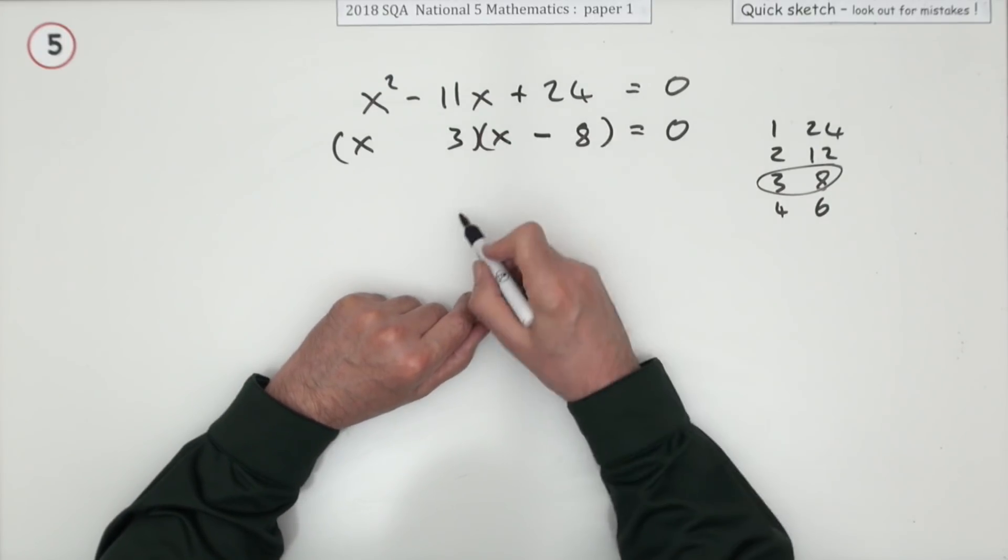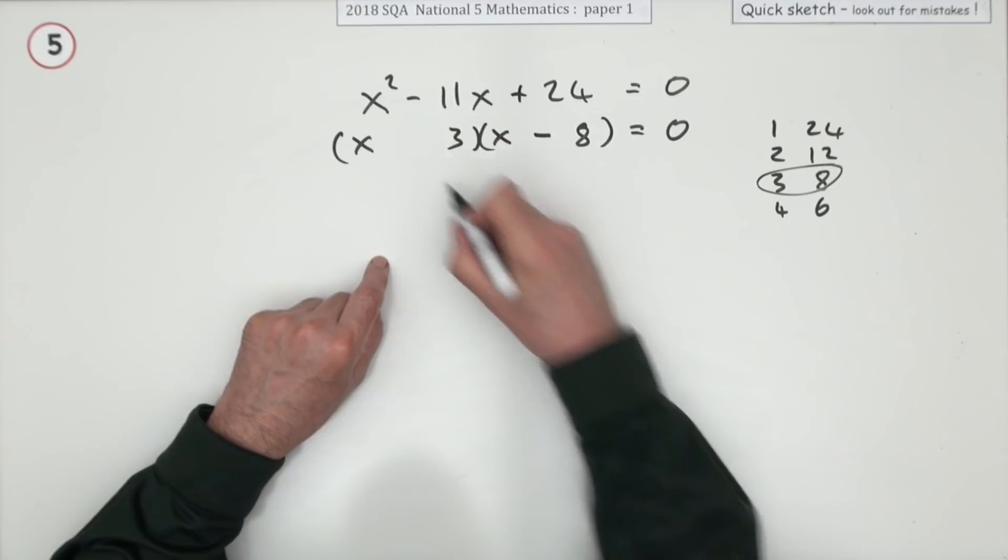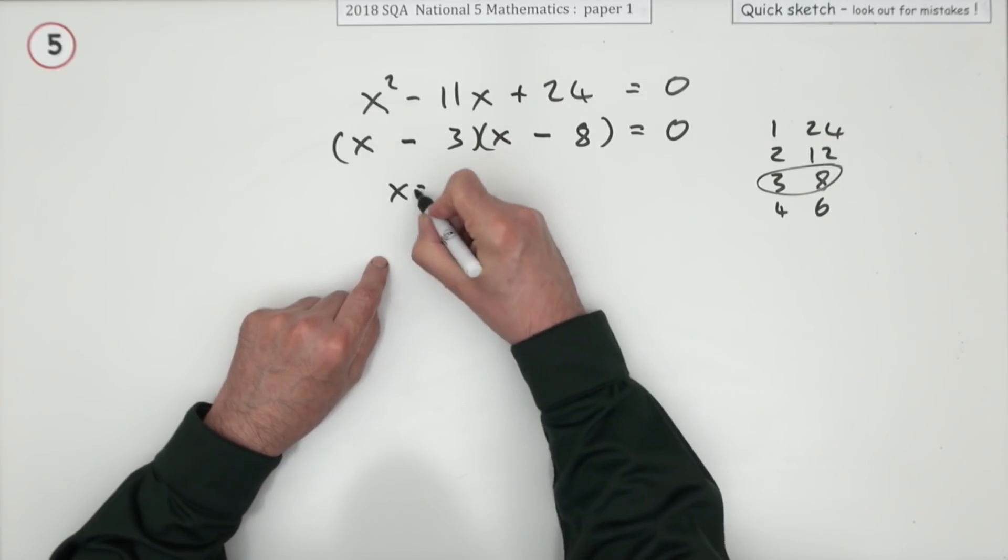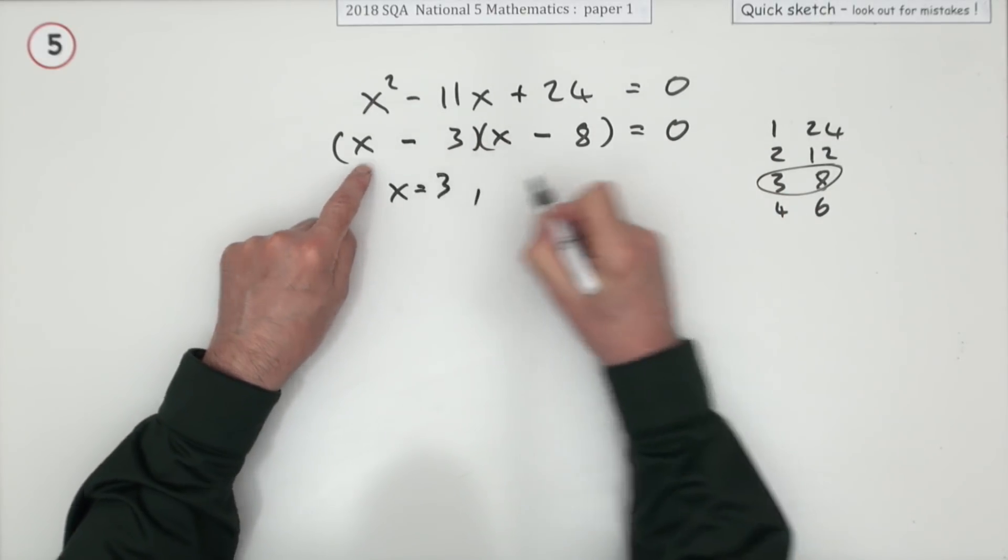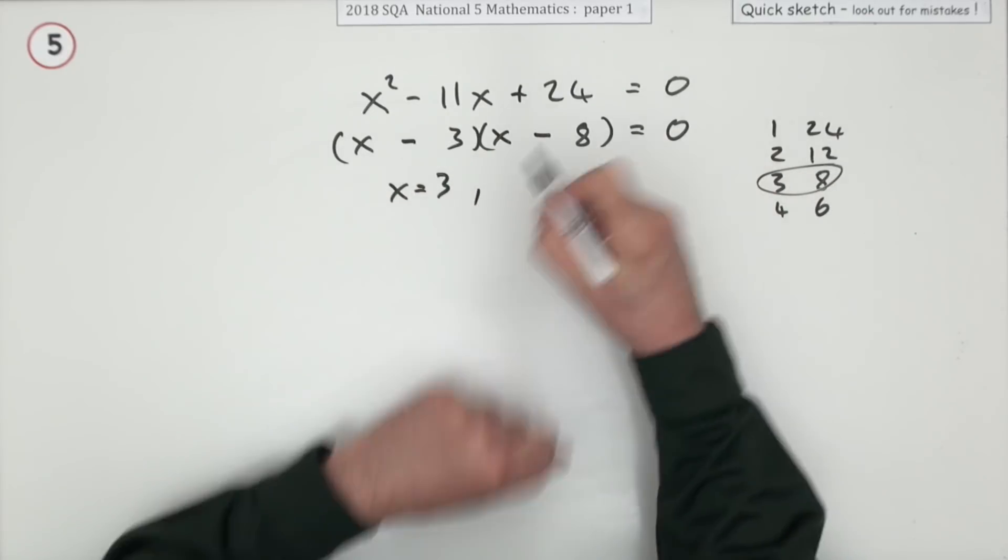But in this case it's simpler because they're both going to be negative if they have to multiply back to make a positive. So the answers are: if that equals zero, x is three. If that equals zero, x is eight.